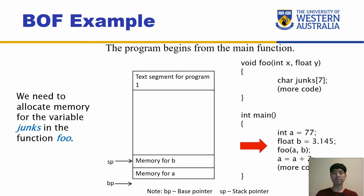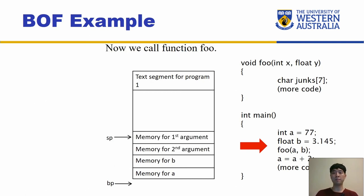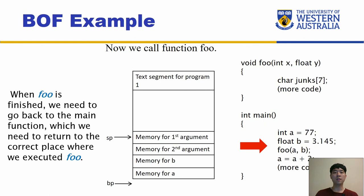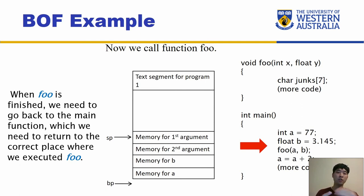Going further, we're calling function foo. That means we need to reserve memory for the second argument and memory for the first argument. So now we're adding stuff for foo, and because we are moving on to another function, we need to be able to return back to main once foo finishes. So we add additional information such that we can go back to our main function later.